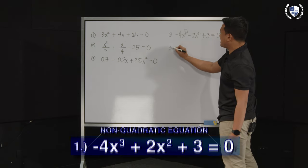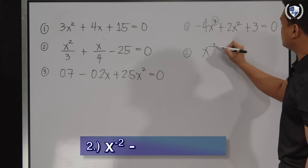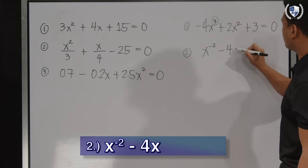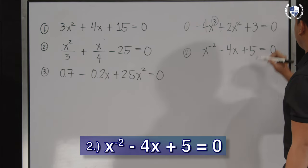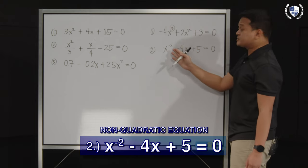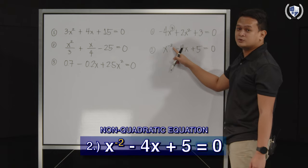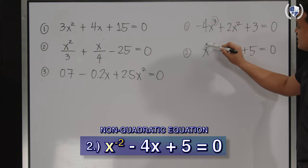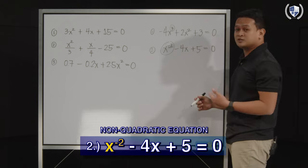Another non-example would be x^(-2) - 4x + 5 = 0. Yes, we see an exponent of x here that is 2, but it's not positive 2. So therefore, just by looking at this term, wherein your exponent is negative 2, we cannot consider this a quadratic equation because we need the exponent to be positive 2.